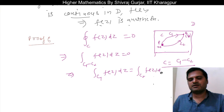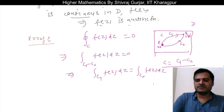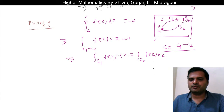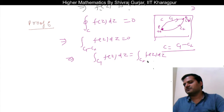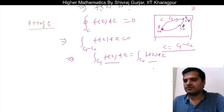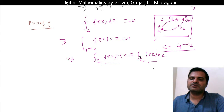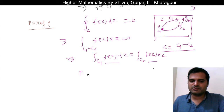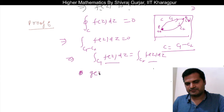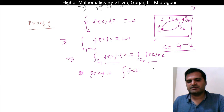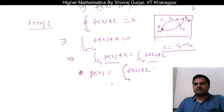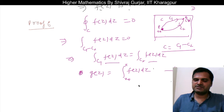Since the integral of f(z)dz equals zero, we can say that the integral along C1 of f(z)dz equals the integral along C2 of f(z)dz. This means that when we integrate f(z) from point P to point Q, the value is independent of the path we are taking — whether we take C1, C2, or C3, the integral value will be the same.